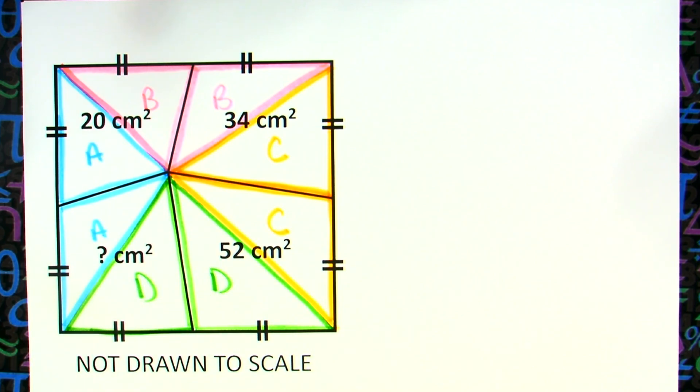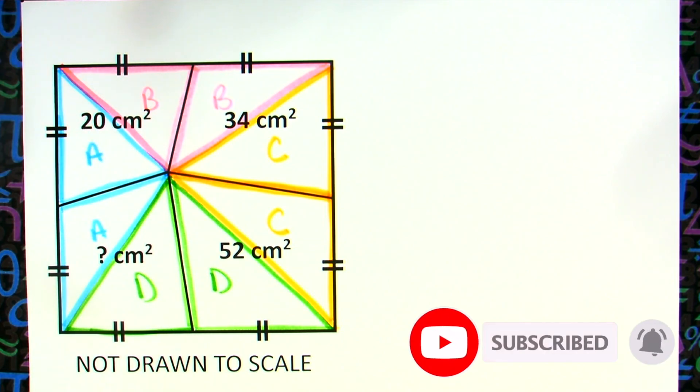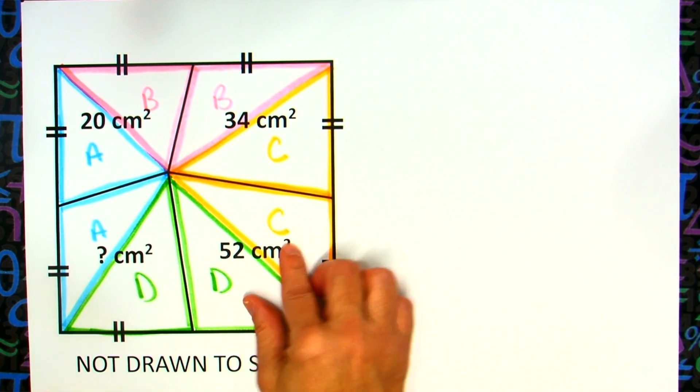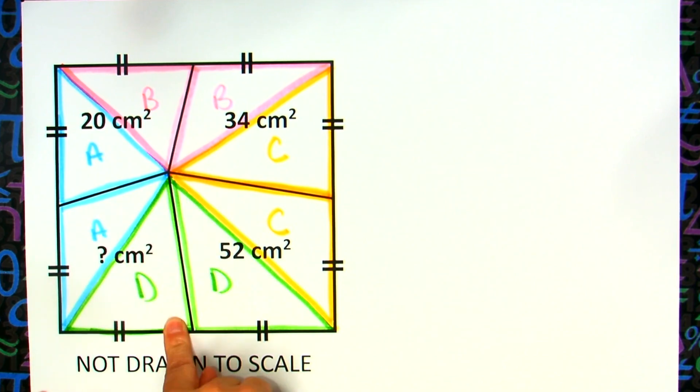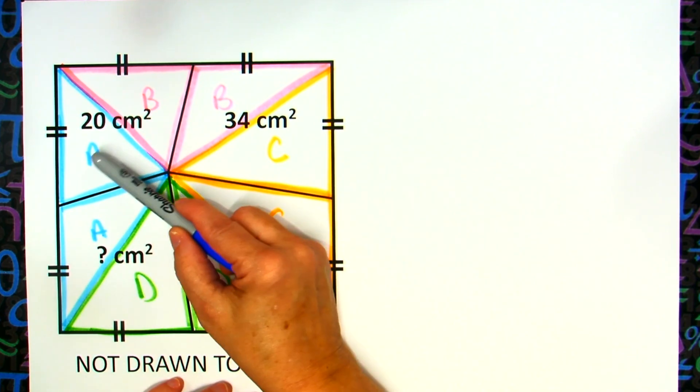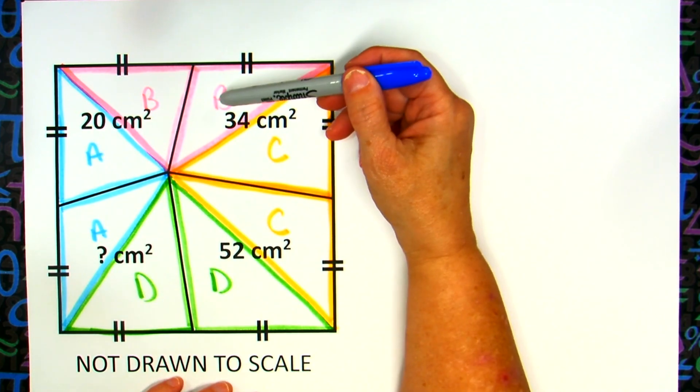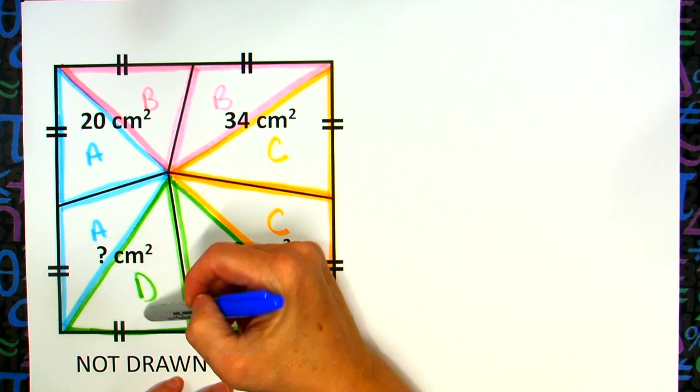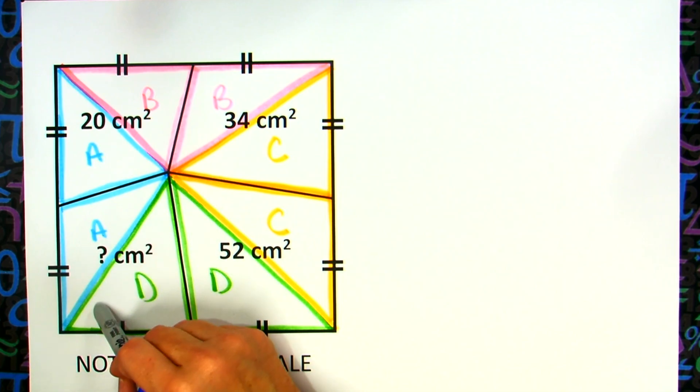Now if you step back now and take a look at what we've got here, basically I've divided this area of 20 square centimeters into two smaller triangles, this one into two smaller ones, this one into two smaller ones, and then this one also into two smaller ones, and this whole area here is what I need to know. So I know if I add the area of A and B, I know it's 20. If I add the area B and C, I know it's 34. If I add C and D, I know it's 52. If I add A and D, that's going to be what my unknown area is that I'm trying to find.